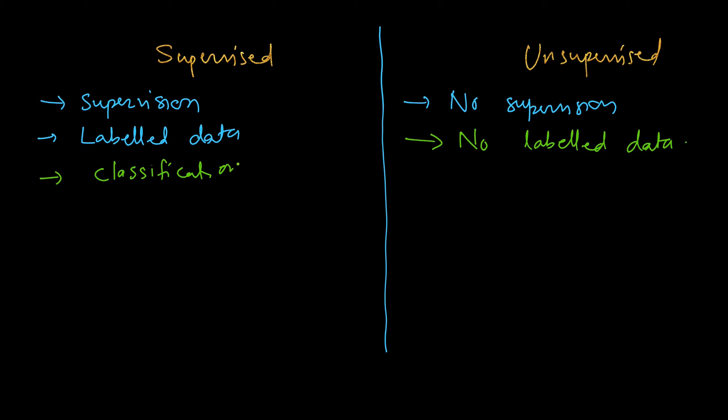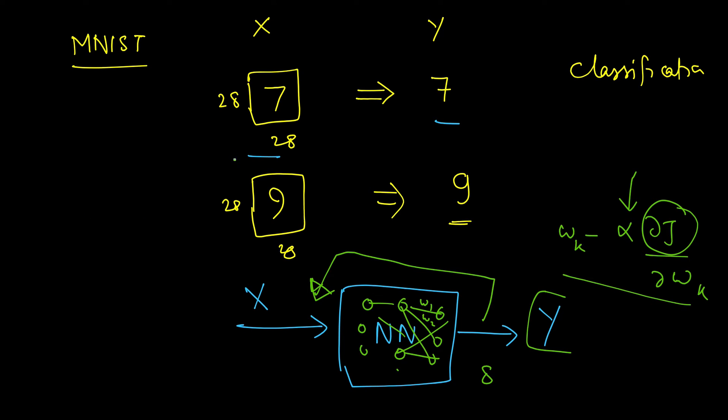And this we categorize into classification task. For example, in this case we were trying to classify the image into one of the 10 classes. So what are the 10 classes here? 0, 1, 2 all the way up to 9. So in this case we had 10 classes. We can have binary classification also. In that case we could have two classes. For example, whether to predict given a mail is spam or not, email. So in this case we have binary classification.